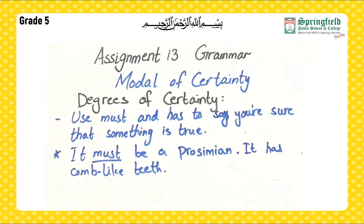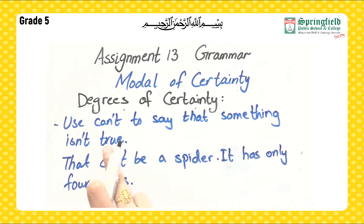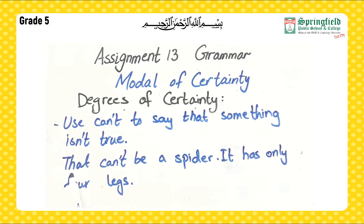The second degree of certainty: use 'can't' to say that something is not true when you are sure it is not true. For example: 'That can't be a spider — it has only four legs.' You know spiders always have eight legs, so this one with four legs can't be a spider.